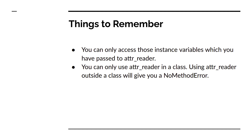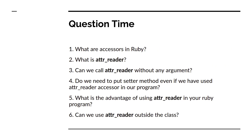Now it's question time. You will get six questions from this video: What are accessors in Ruby? What is attribute reader? Can we call attribute reader without any argument? Do we need to put setter methods even if we have used attribute reader? Yes — if you want to change the value of an instance variable, you need to write setter methods manually when using only attribute reader. What is the advantage of using attribute reader? And can we use attribute reader outside the class? No, we cannot.